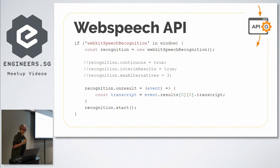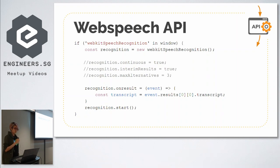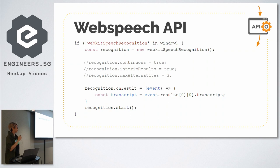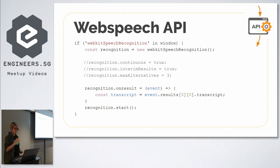The 'onresult' event handler is fired whenever the API sends back a result. From here we're able to extract the transcript as well as the corresponding confidence score, which is the confidence level it has in the accuracy of the transcript. Finally, we just fire the call to start it.